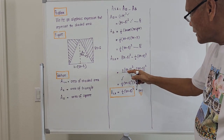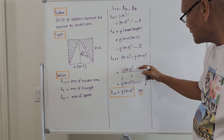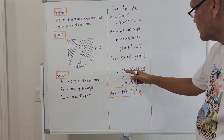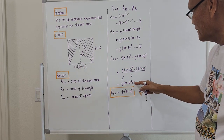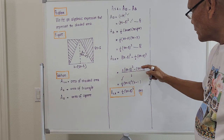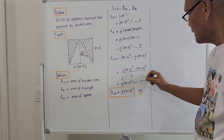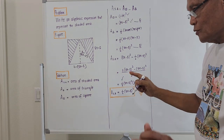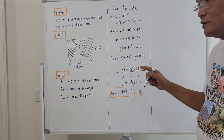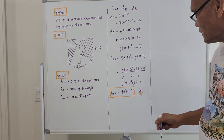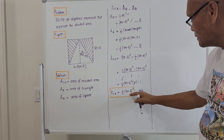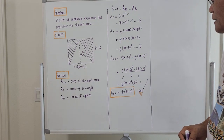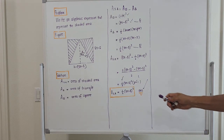We factor out (8x − 5)². What remains from the first term is 2, and from the second term is minus 1, giving us 2 minus 1 equals 1. So the area of the shaded region simplifies to one half of (8x − 5) quantity squared. That is our final answer — the algebraic expression for the shaded area in terms of x.